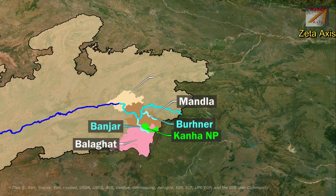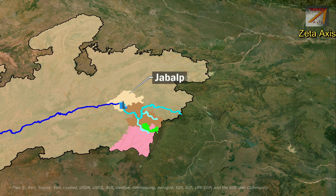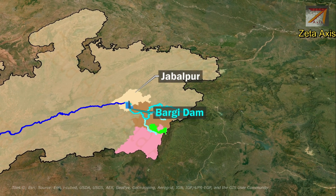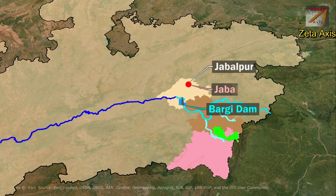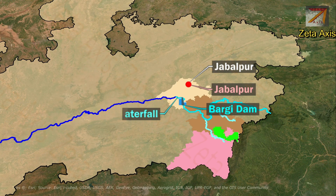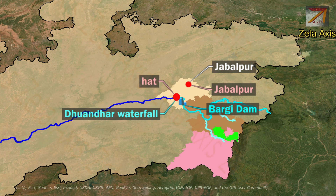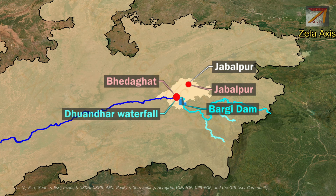From Mandla district, Narmada river enters Jabalpur district where Bargi Dam is built on it. The river passes south of Jabalpur city, and downstream, Dhuandhar Waterfalls are located just before Bhedaghat. At Bhedaghat, the Narmada river passes through a narrow stripped valley of marble rocks for about three kilometers.